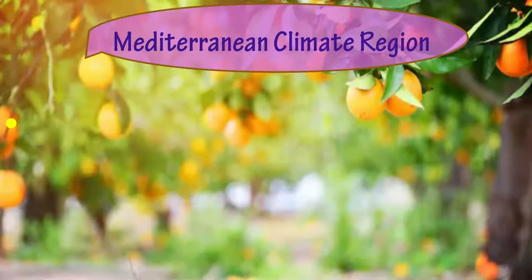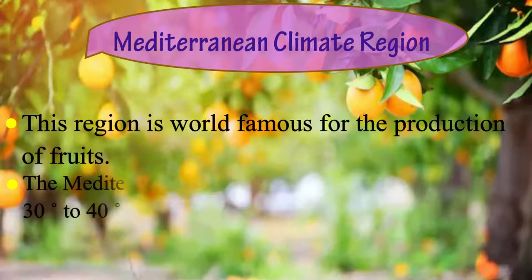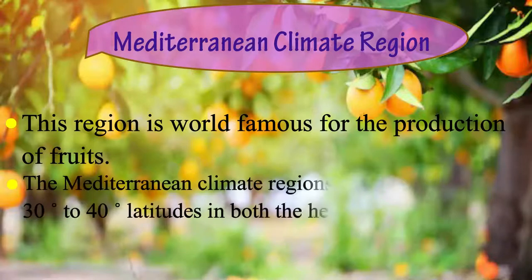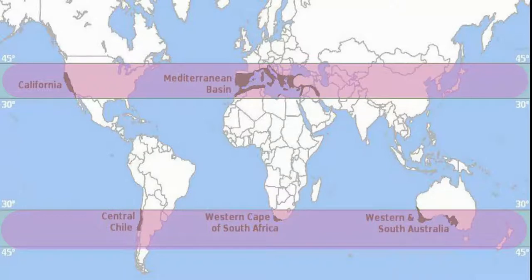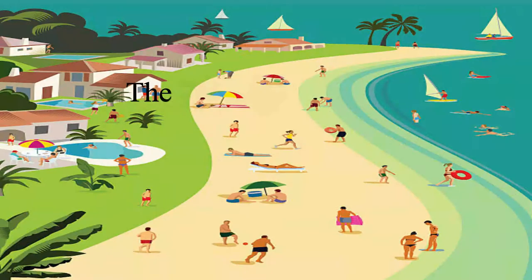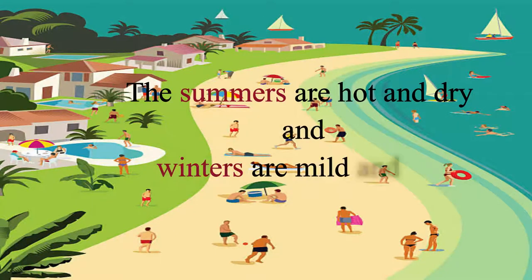The Mediterranean climate region is world famous for the production of fruits. It is located between about 30 degrees to 40 degrees latitudes in both the hemispheres. The summers are hot and dry, and winters are mild and wet.